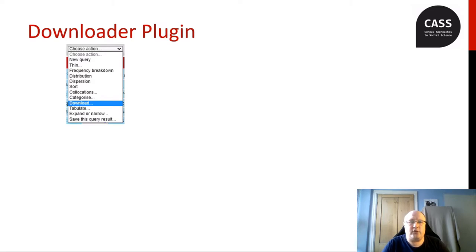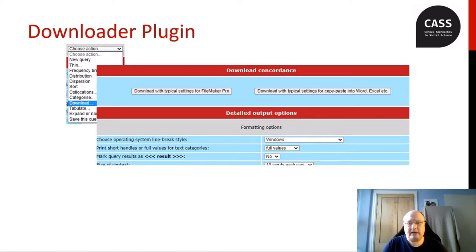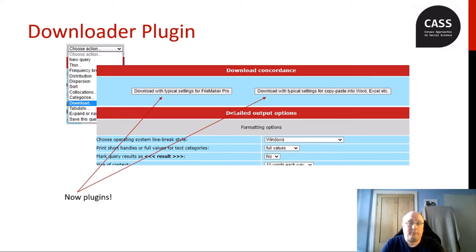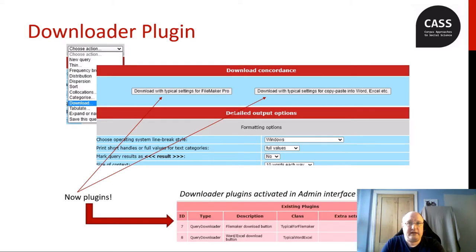Different named types of plugins are defined to address different user needs. Downloader plugins generate a text file download from the results of any query; they connect up to the download option in the concordance action menu. On the download page, CQP Web's default tool is a complex set of options at the bottom of the page, but there have always been shortcut buttons at the top for frequently used options. Now those buttons are generated by plugins, and it is fully configurable which buttons for specific download formats are added or removed. Behind the scenes, plugins are managed by the system administrator, who has an interface showing what plugins are available and controlling which users and corpora they are activated for.